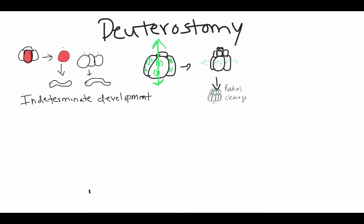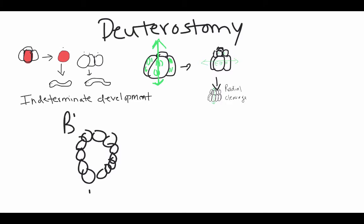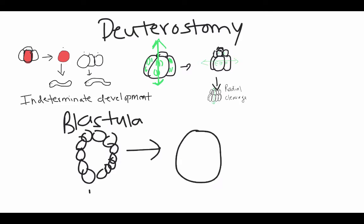Eventually these cells divide enough to turn into a hollow ball of cells — there are many more cells than shown, and this is a cut-through, so it's really a sphere with a cavity in the middle. We call this the blastula. The blastula then starts folding inward during gastrulation, and that opening is called the blastopore.